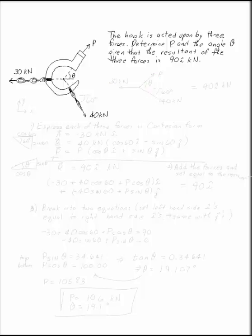The hook is acted upon by three forces: 30 kilonewtons, 40 kilonewtons, and P. Determine P and the angle theta so that the resultant of the three forces is 90i. So what we're going to want to do is take these three forces—P, 30 kilonewtons to the left, and 40 kilonewtons which acts at a 60 degree angle—and these three forces have to add up.